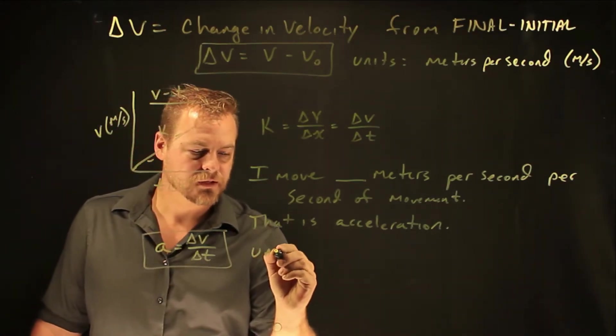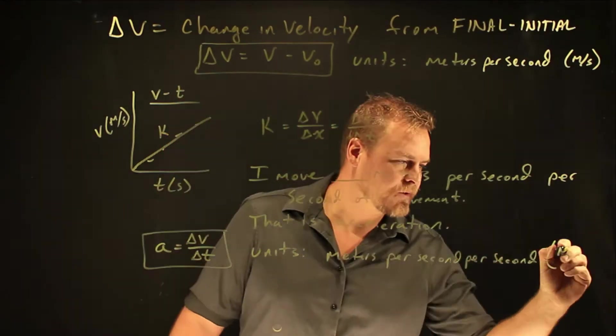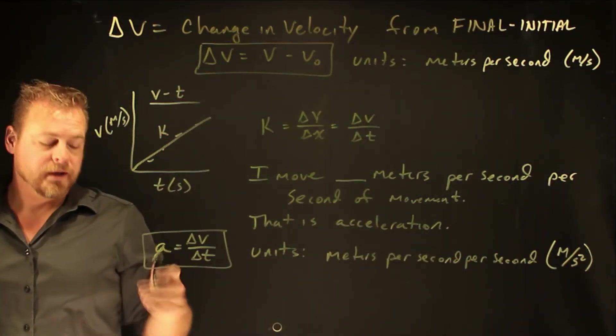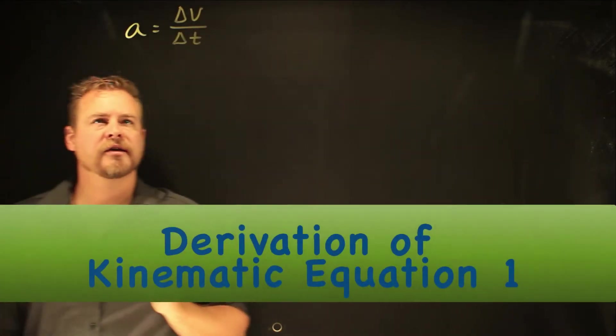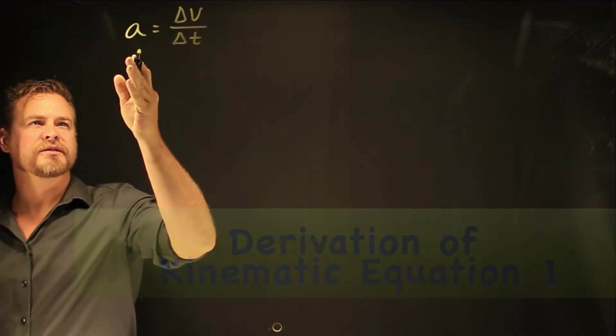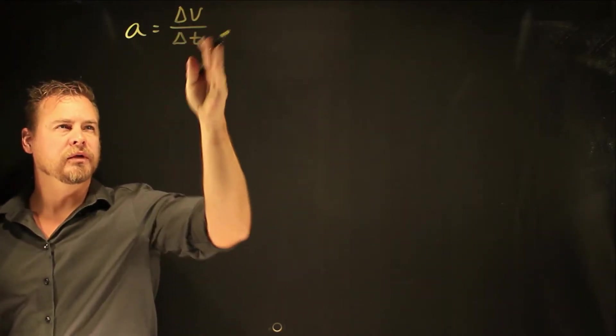And the units for acceleration. So my change in velocity over a given amount of time is acceleration as expressed in the equation a equals delta v over delta t.